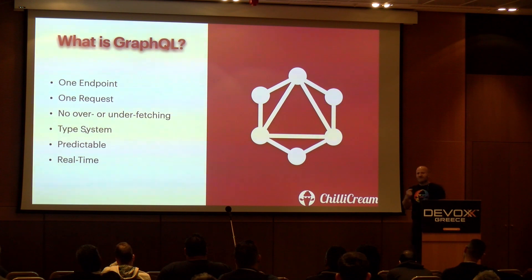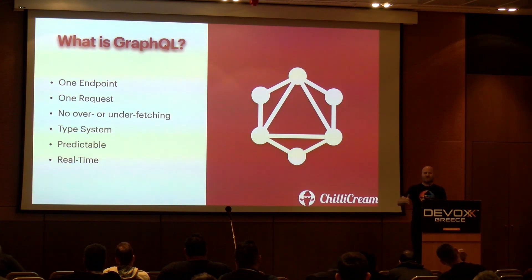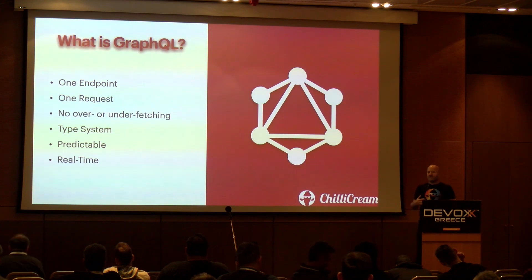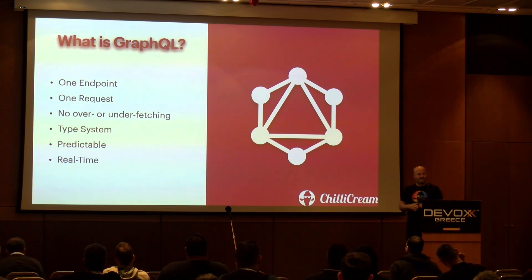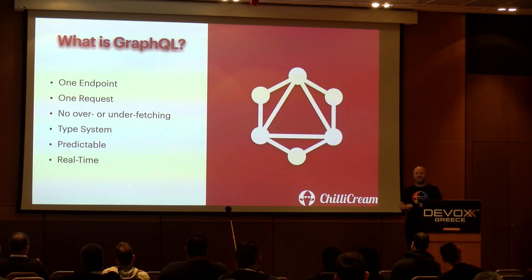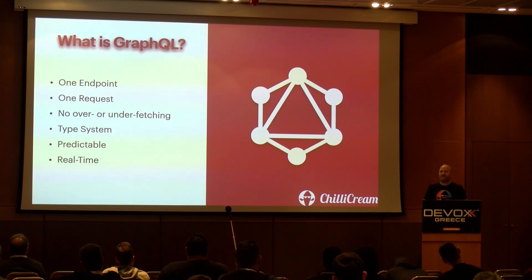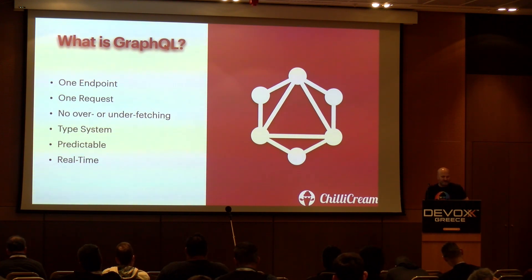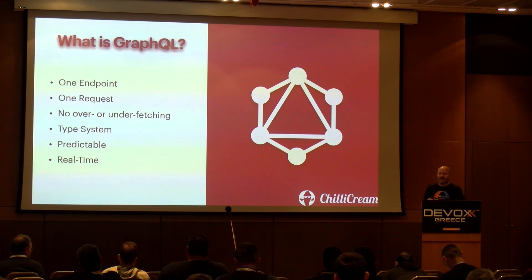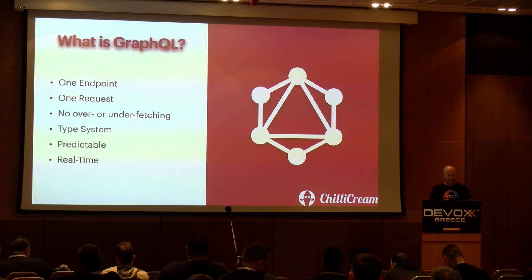With GraphQL you have a single endpoint to issue all queries, asking for all the data you need in a single request — each interaction with your backend is just one request. There's no over- or underfetching. Overfetching is when you have to consume more data than you want. Underfetching is what we saw with those IDs in REST requests — you don't want the author ID, you want the actual author data. And GraphQL is built on a strong type system with strong data contracts, making it predictable to use. On top of that, GraphQL supports real time.